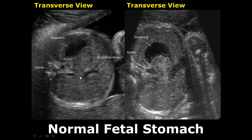The filling of the stomach depends on the swallowing of amniotic fluid by the fetus. Here we can see the umbilical vein and here is the stomach. And here is the spine, hyperechoic, with shadowing.